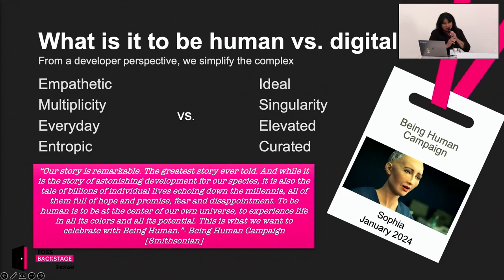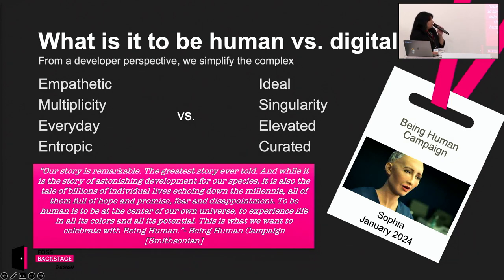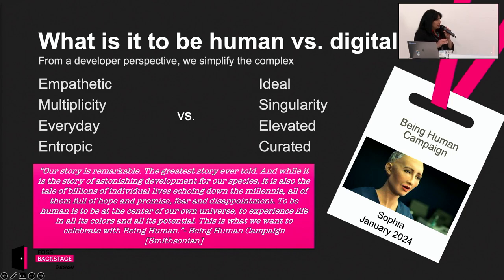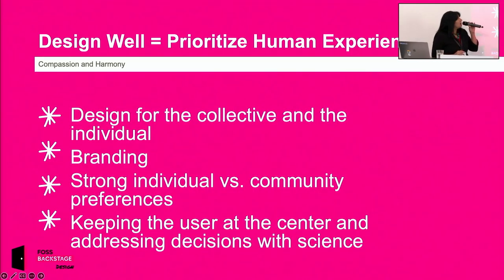When we think about what it is to be human, we have Sophie — featured by the Smithsonian Institute — who represents the closest thing to AI mimicking humans. The Smithsonian's campaign 'Being Human' says: 'Our human story is remarkable — it's the greatest story ever told. It's the tale of billions of individual lives full of hope and promise, fear and disappointment. To be human is to be at the center of our own universe, to experience life in all its colors and potential.' This quest to be human always remains. So what does it mean to design for open source software?